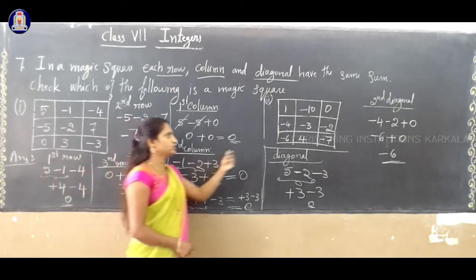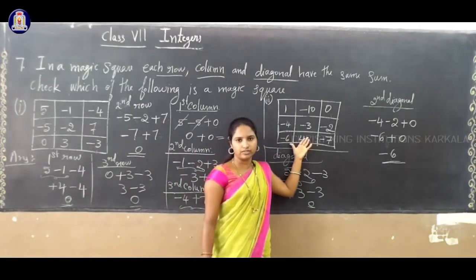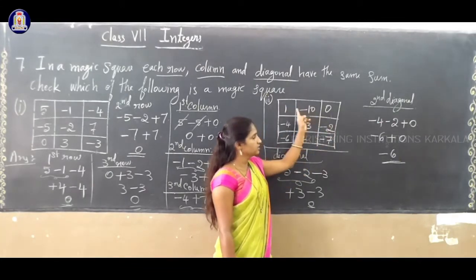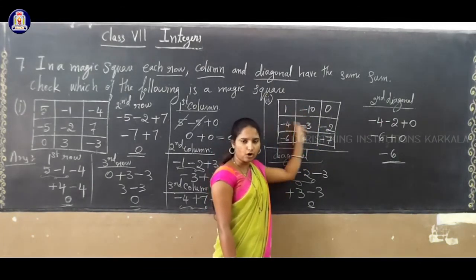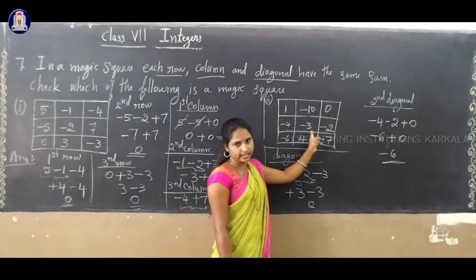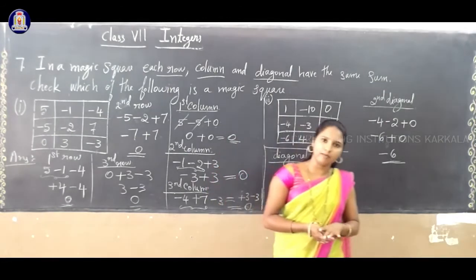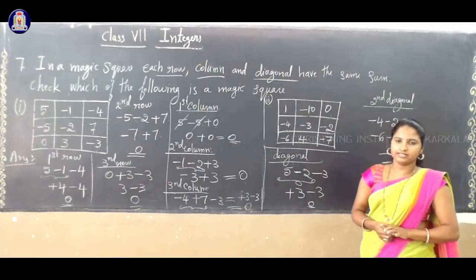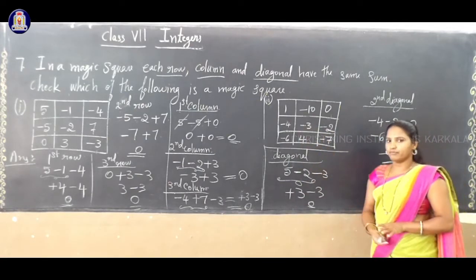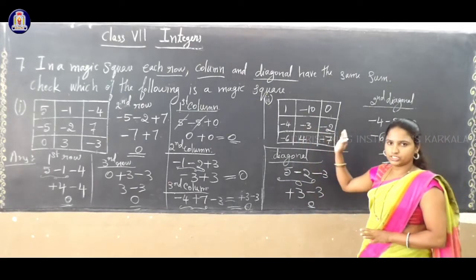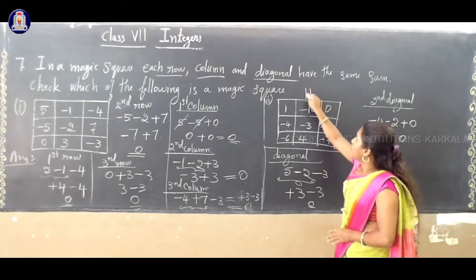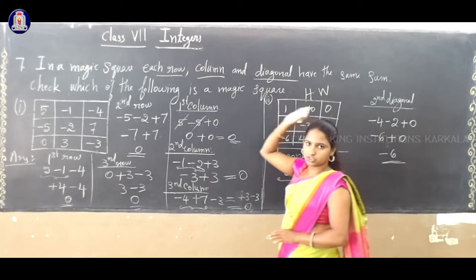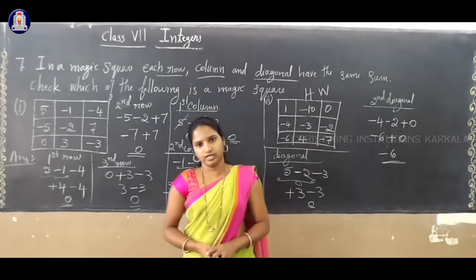Now, similarly, we have to check the second magic square. We have to check each column, each row and diagonal. If you get the same answer for rows, columns and diagonals, then we can say that the second square is a magic square. This is sum A in the textbook — please refer to your textbook.